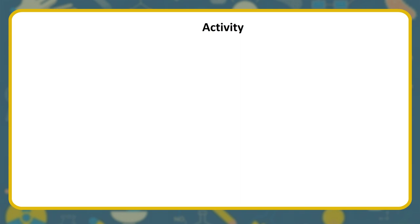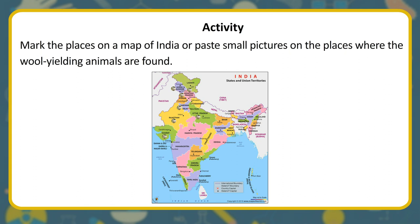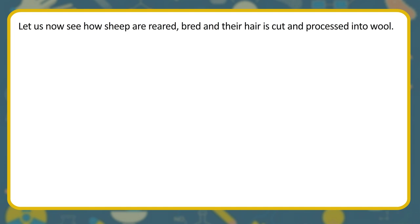Activity: Mark the places on a map of India, or paste small pictures on the places where the wool-yielding animals are found. Let us now see how sheep are reared, bred, and their hair is cut and processed into wool.